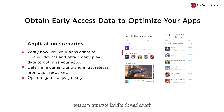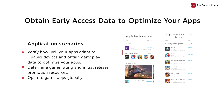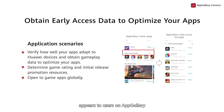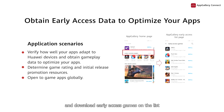You can get user feedback and check how well your game adapts to user devices based on the data, and use this information to make improvements to your game. On the right, you can see how the early access service appears to users on AppGallery. Users can enter the access game list page from the early access rankings on the home screen of AppGallery and download early access games on the list.